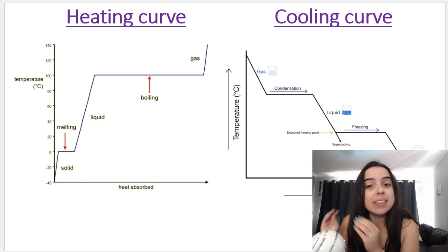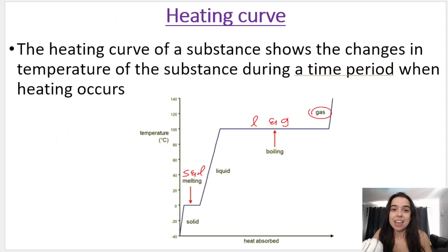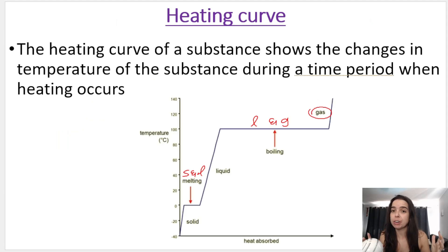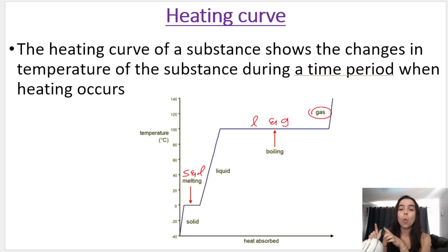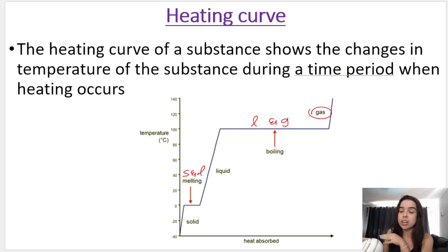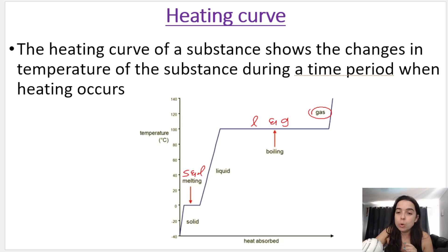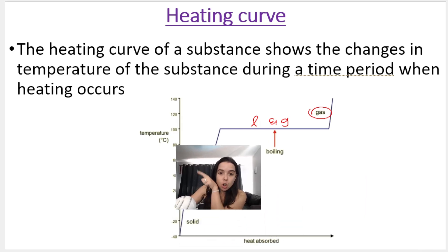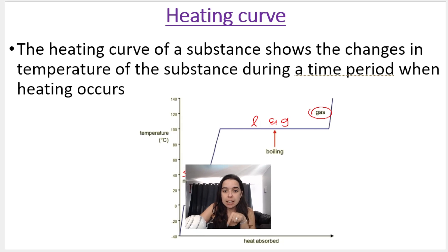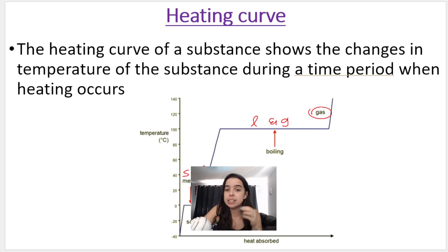Let's discuss the differences between the heating curve and the cooling curve. The heating curve of a substance shows the changes in temperature of the substance during a time period when heating occurs — so we are adding heat or energy to a substance. In this curve we're starting out at the solid phase, adding heat and energy, and recording the temperature change over time. This axis is heat absorbed or time, because as time goes on heat is being absorbed and we are measuring temperature.